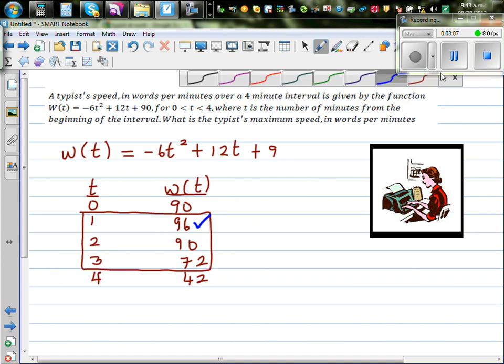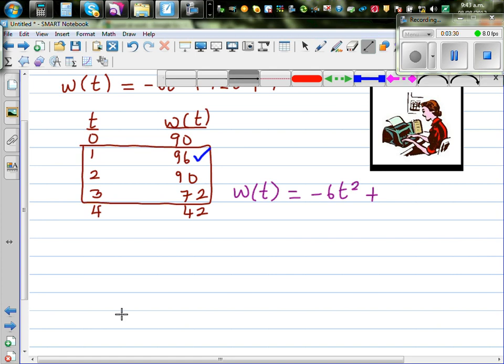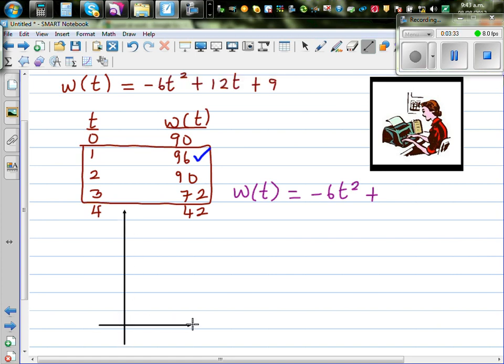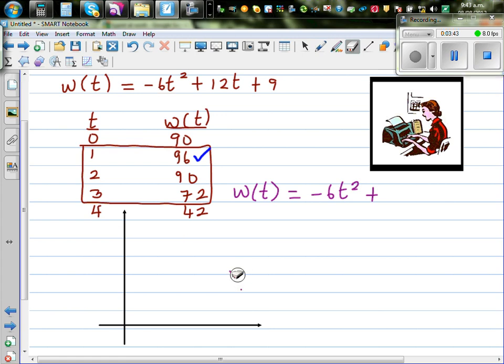So now let's use calculus. You may wonder why do we need calculus, because this is a neat number, so it's not always a neat answer like this. Let me write the notation. W(t), or words per minute as a function of time, is -6t² + 12t + 90. Let's draw the graph.